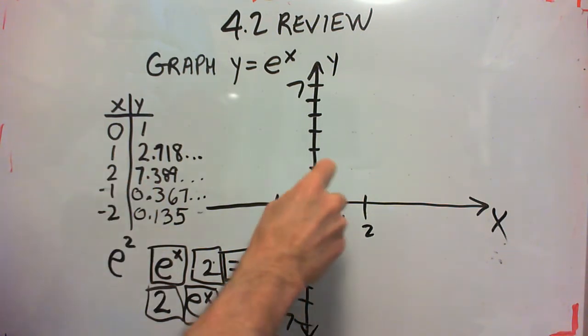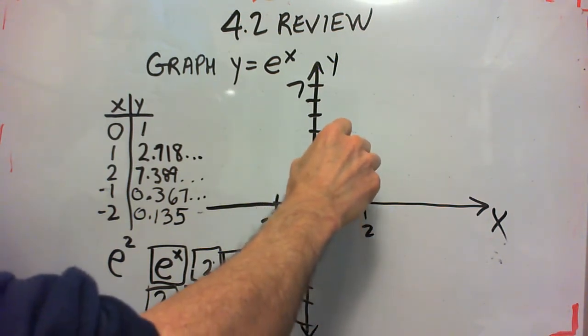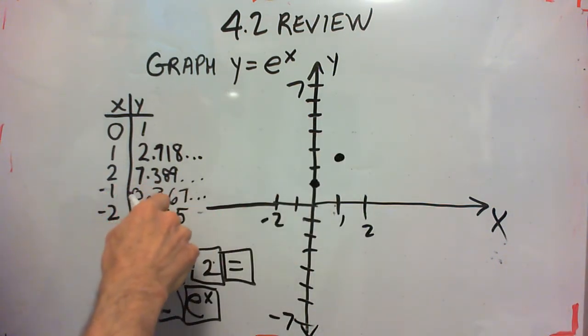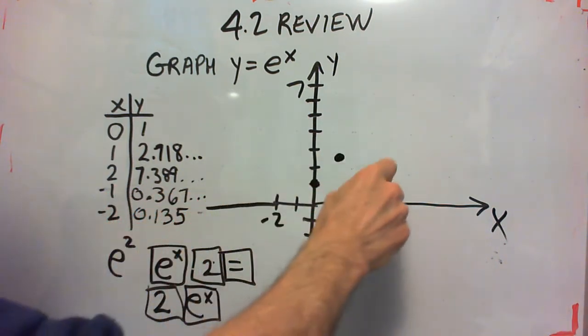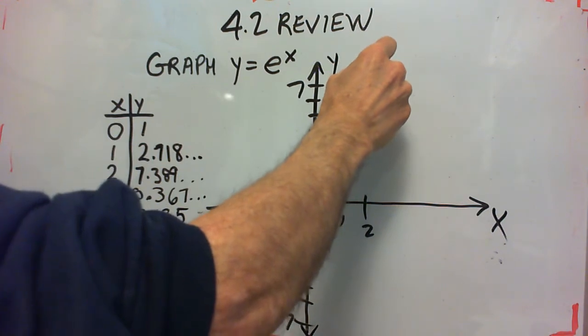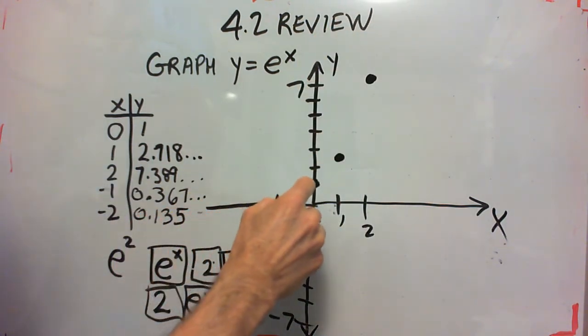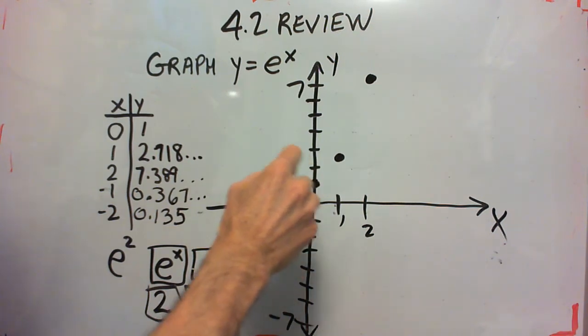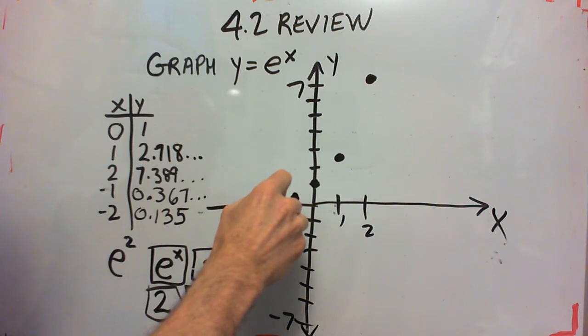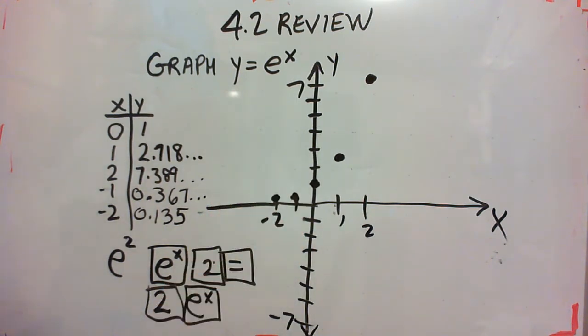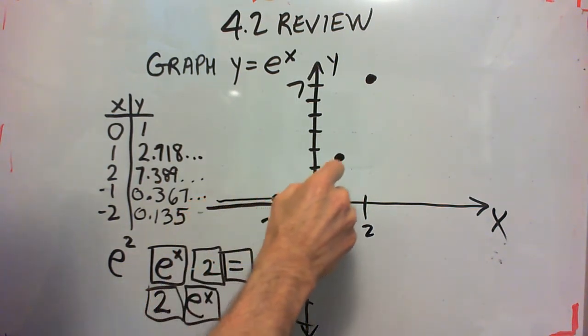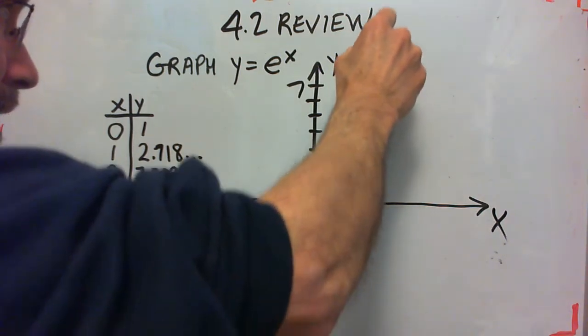Okay, so then we plot these. x equals 0, y equals 1, x equals 1, y equals 2.78, x equals 2, y equals 7.389, just a little over 7, x equals negative 1 is 0.36, and e to the negative 2 is 0.135.